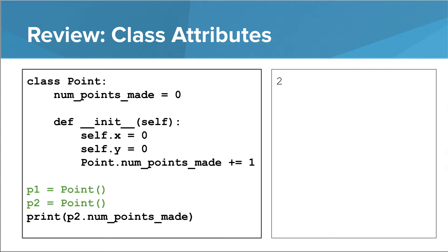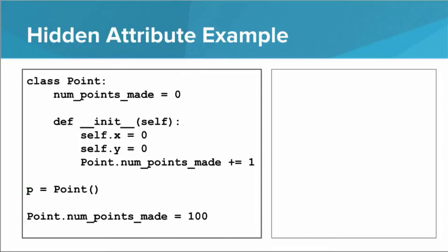The issue is, since this is shared across the entire class, someone outside of the class could just set numPointsMade to 100. That's a problem because we want this value to represent the number of points that have been created, not just any random value that it gets set to. So how can we fix this?